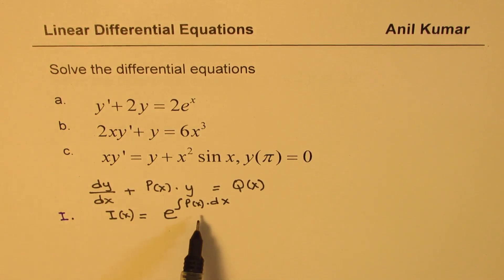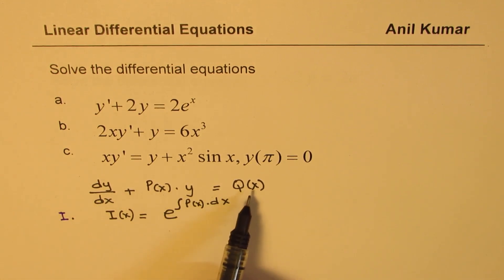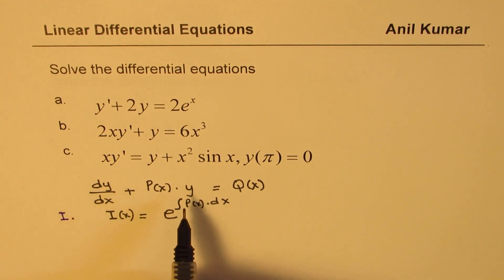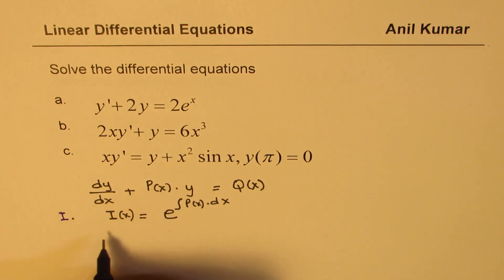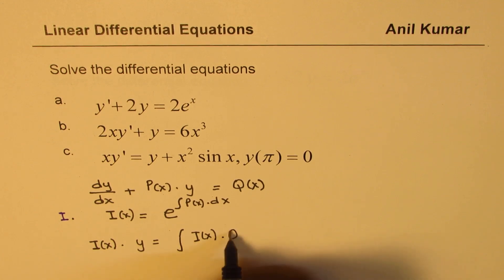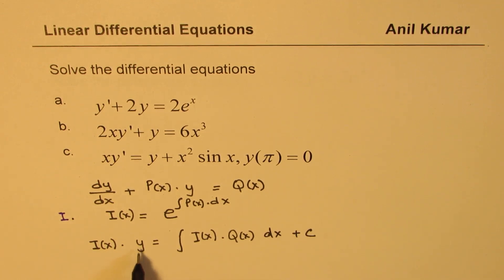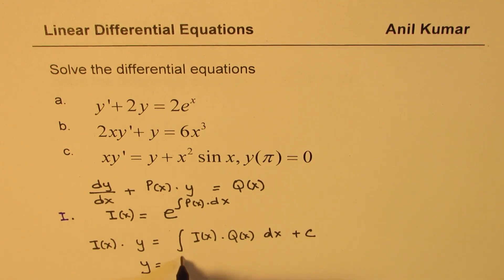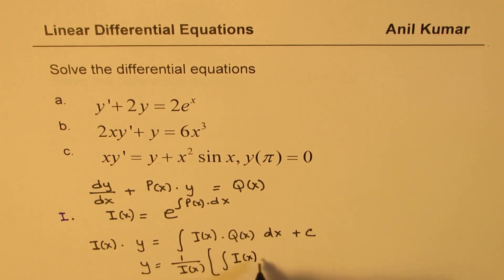Once we get that integrating factor, we multiply the whole equation by it. That gives us a form where the integrating factor i(x) times y equals the integral of i(x) times q(x) dx plus c. From here, we solve for y.